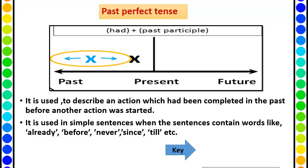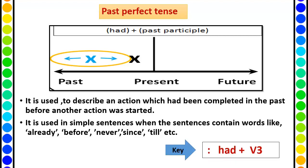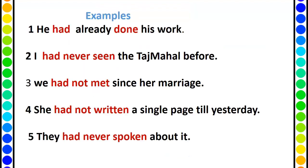The keyword is 'had' plus past participle. Remember, the past tense of 'have' is 'had'. Examples: He had already done his work. I had never seen the Taj Mahal before. We had not met since her marriage. She had not written a single page till yesterday. They had never spoken about it.